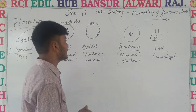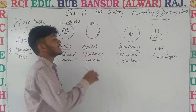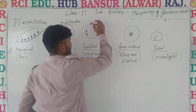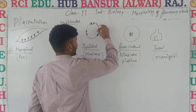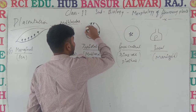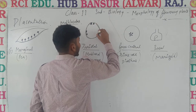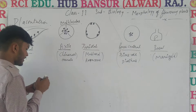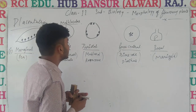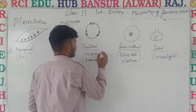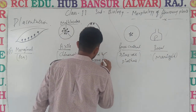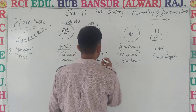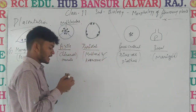Third, we will talk about parietal placentation. ऐसा arrangement जिसके अंदर ovules peripheral region में दिखने पाई जाते हैं — that is, the periphery of the ovary. इस periphery के उपर ovules पाई जा रहे हैं. That kind of arrangement is known as parietal placentation. This is basically found in mustard and argemone.